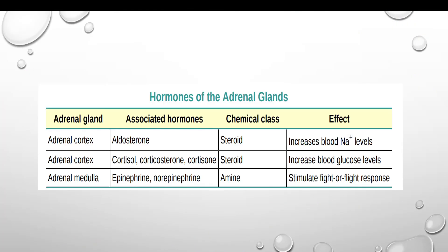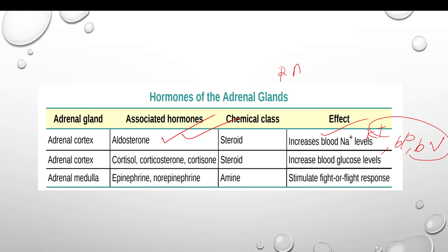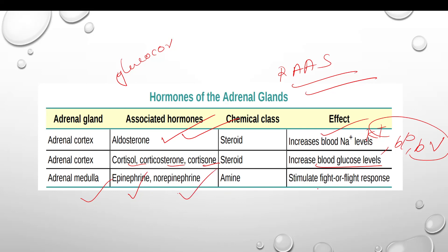To finish the adrenal gland recap: mineralocorticoids — aldosterone — maintain sodium levels, potassium levels, blood pressure, and blood volume. The angiotensin system maintains aldosterone. Next, glucocorticoids — cortisol and corticosterone — regulate blood glucose levels. Finally, the adrenal medulla produces catecholamines — epinephrine and norepinephrine — which act as both hormones and neurotransmitters and mediate the fight-or-flight response.